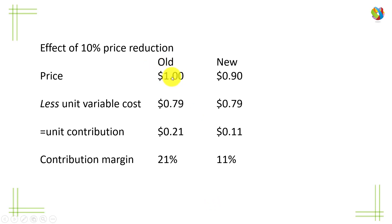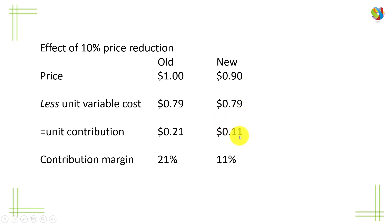So the old price is 1. We've decreased the price by 10%, so that's 90 cents. The variable costs per unit remain the same at 79 cents. 90 less 79 leaves us 11, so now the contribution margin — the part that will cover and hopefully exceed the fixed costs — is only 11%. That's the general example. Now let's look specifically at Louis Vuitton.